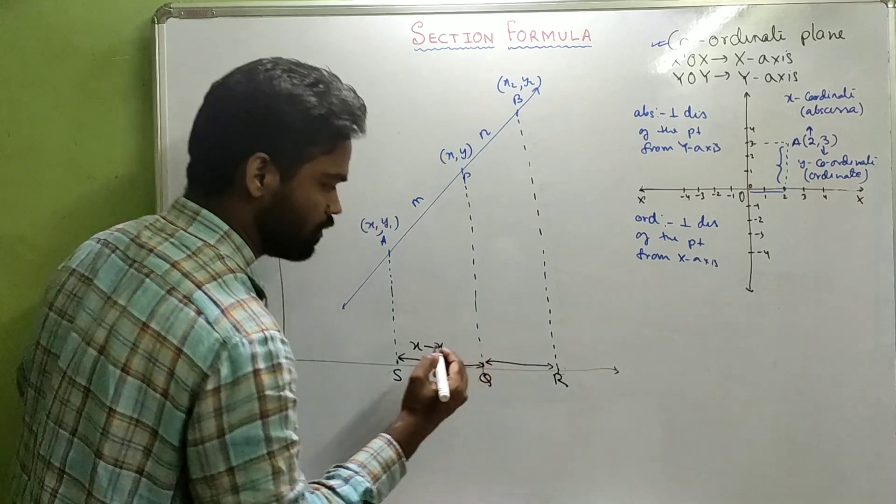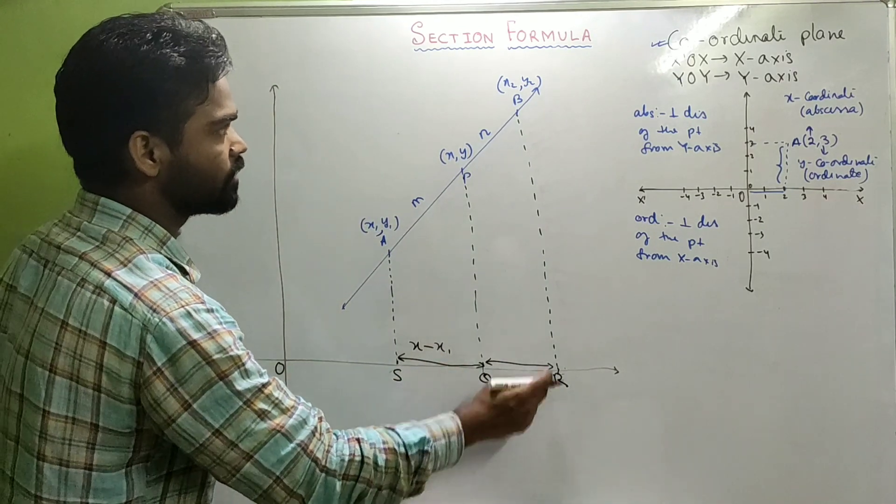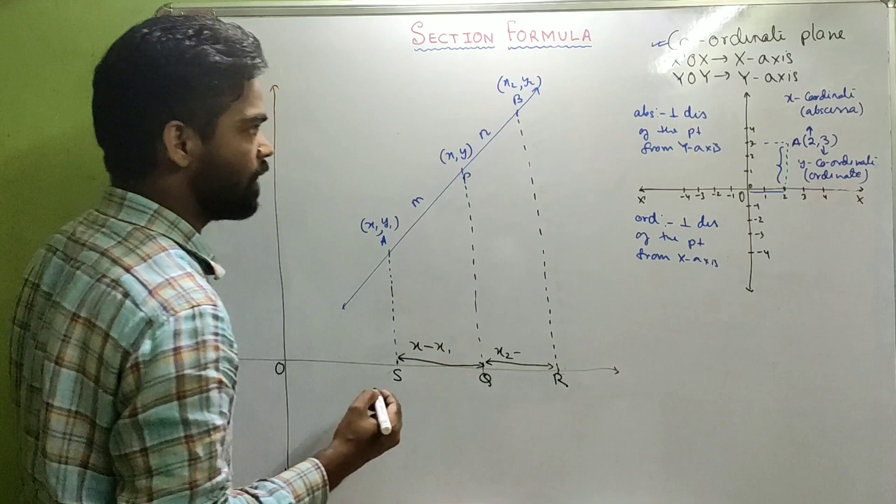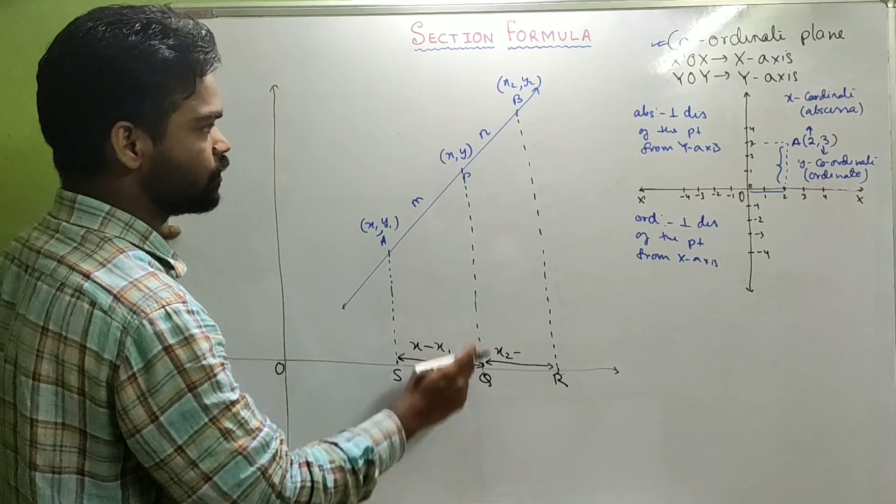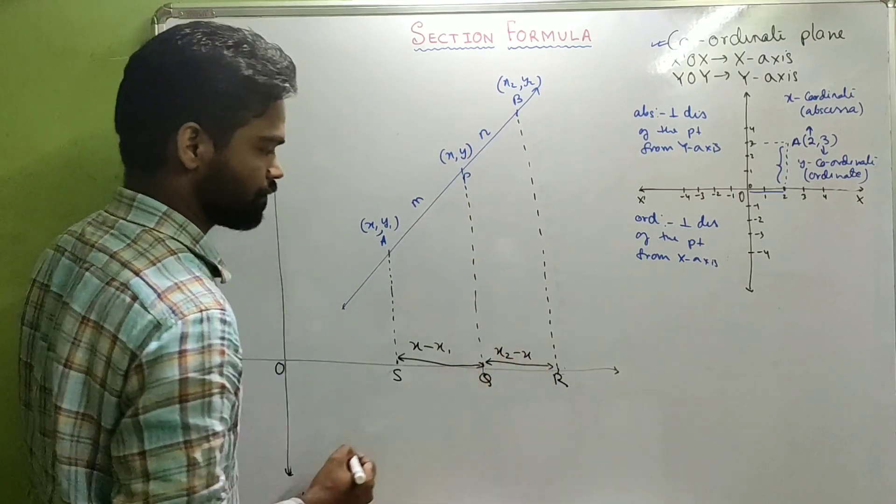Similarly, QR. Look over here. QR is OR, which is X2, minus OQ, which is X. Am I clear?